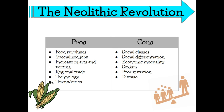Food surpluses led to specialized jobs. There was more food and more free time, which meant everyone didn't need to work constantly for their daily meals. People got really good at one specific job rather than doing everything at once. This increase in free time also led to an increase in arts and writing, and regional trade developed. Technology also advanced in order to continue this growth and progression. More people meant more towns and cities.